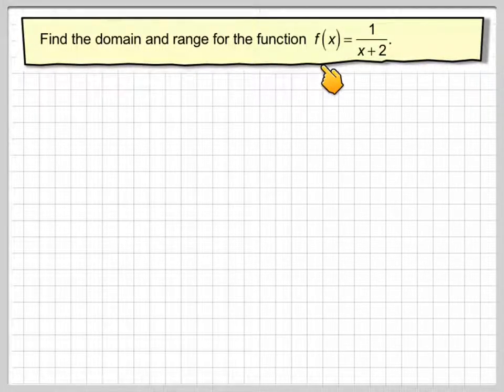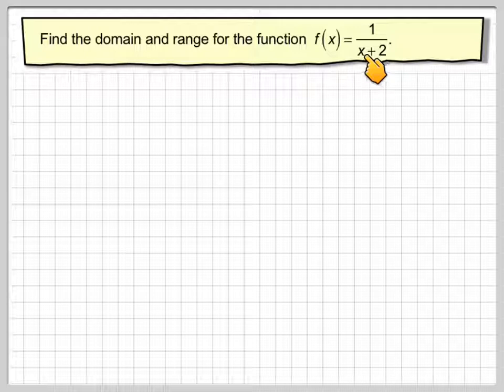Find the domain and range for the function f of x is 1 over x plus 2. Now before we actually draw the graph, is there a value of x that you cannot put into this function and get an answer?